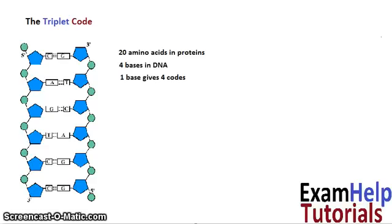However, by using two bases, we could actually get 16 different codes, but that still wouldn't be enough. So what if we use three bases, though? That would give us 64 codes.